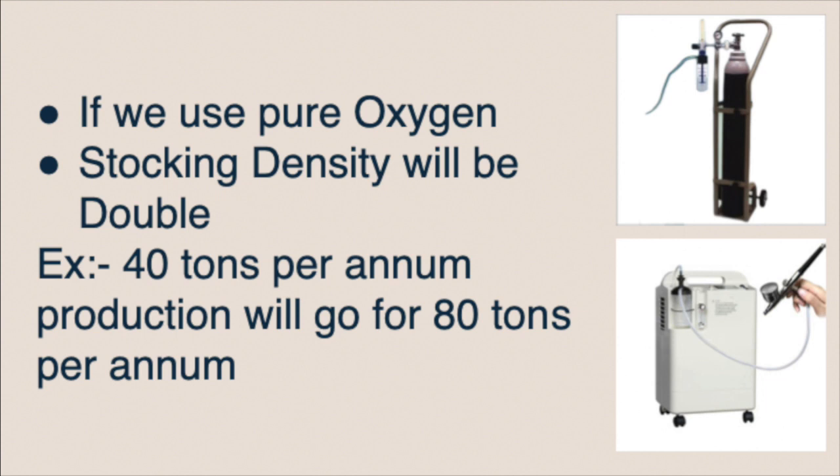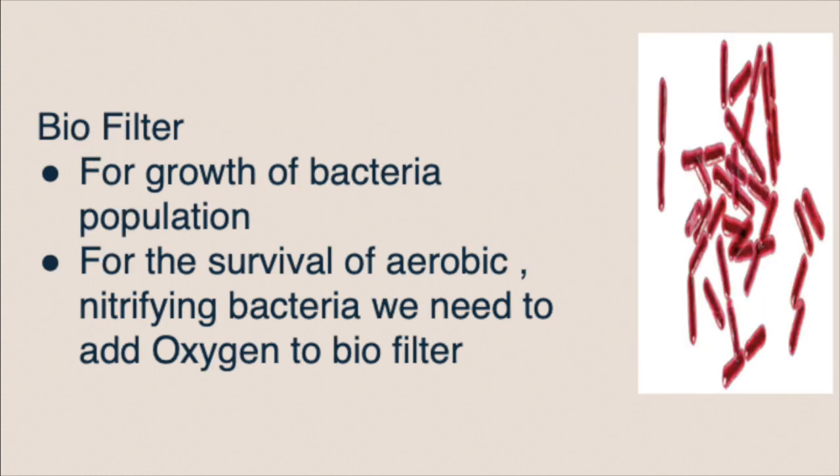With proper oxygen management, you can achieve 40 tons per annum or even 80 tons per annum production. If you have high stocking density, you also need to support aerobic bacteria and nitrifying bacteria for system survival.